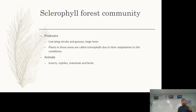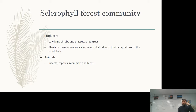In the sclerophyll forest community, producers are largely low-lying shrubs, grasses, and very large trees. These plants are called sclerophylls due to their adaptations: they have thin leaves, a waxy cuticle covering, and two-sided leaves — one side with a high concentration of chlorophyll and the opposite side with quite a low concentration. You can observe this at Cleland, noticing one side is far greener than the other. Animals include insects, reptiles, mammals, and birds, with somewhat less diversity.